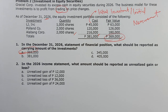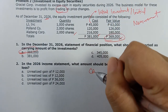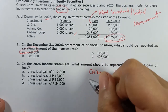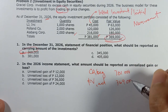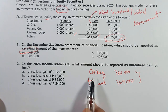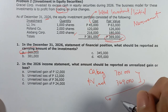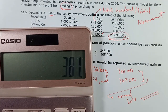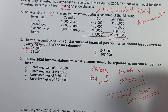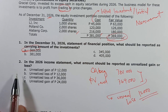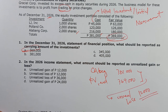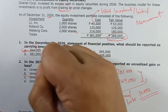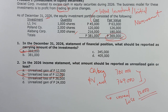Number 2: In the 2026 income statement, what amount should be reported as unrealized gain or loss? From carrying amount of 381,000, naging 369,000. Ibig sabihin bumaba yung value ng ating asset. If mas malaki yung carrying amount at the beginning compared sa fair value at the end, meron tayong unrealized loss. Unrealized loss = 381,000 minus 369,000 = 12,000. Therefore question number 2, unrealized loss of 12,000.